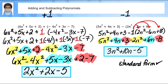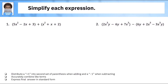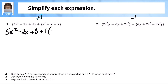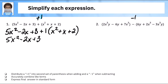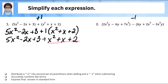Hit pause and jot this down into your notes. Moving into the guided practice, we're going to do the same thing again. In the first one we're going to distribute a positive one, and the second one is subtraction so we're distributing a negative one. I'll start by just rewriting. You can see my positive one in the first example. I'll distribute — my first terms are the same, and one times x squared is just x squared, plus x, plus two, so nothing really changes.